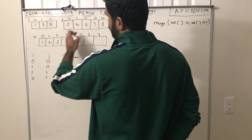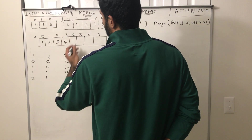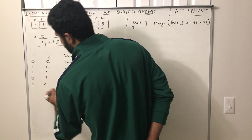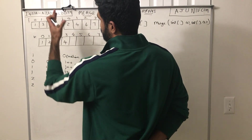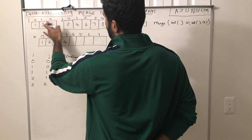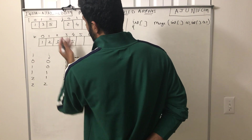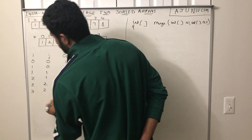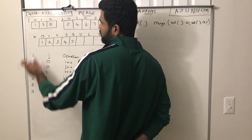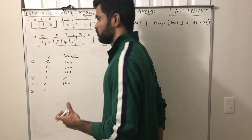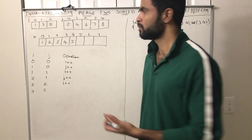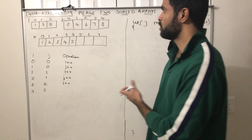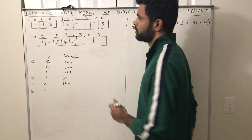Now i is at 2 (value 5) and j is at 1 (value 4). Since 4 is less than 5, we add 4 and increment j. Now i is 2 and j becomes 2. We compare 5 with 6 — 5 is less, so we add 5 and increment i. Now i is 3, and the length of the first array is 3, which means we have added all elements 1, 3, and 5 from array one.